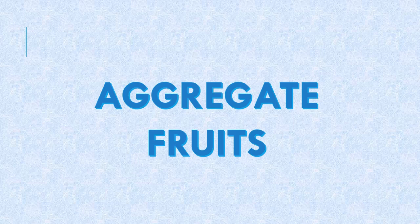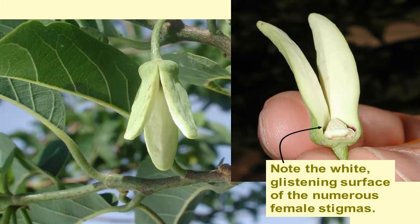First of all, let us go through a series of pictures depicting various stages of flowers to the fruit, and from that let us see if we can understand what type of fruit these are. The first picture — as you can see, there is a white glistening surface with numerous female stigmas on the flower, and a larger flower structure. Have you seen this before? I am sure you have seen it somewhere.